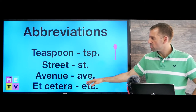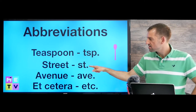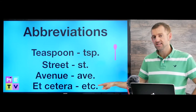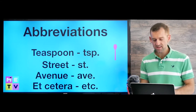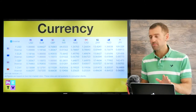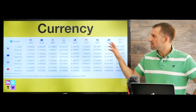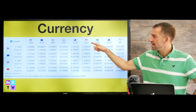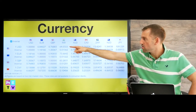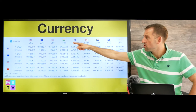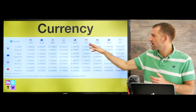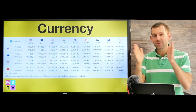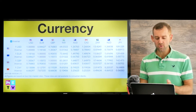Here are some other common ones: Street, Avenue, Etc. Those are really common. It's also very common to use abbreviations with currency. Canadian dollars becomes C-A-D. Euro becomes E-U-R. It's too long to write 'Canadian dollars' or 'Japanese yen,' so we need to make it a little bit shorter.